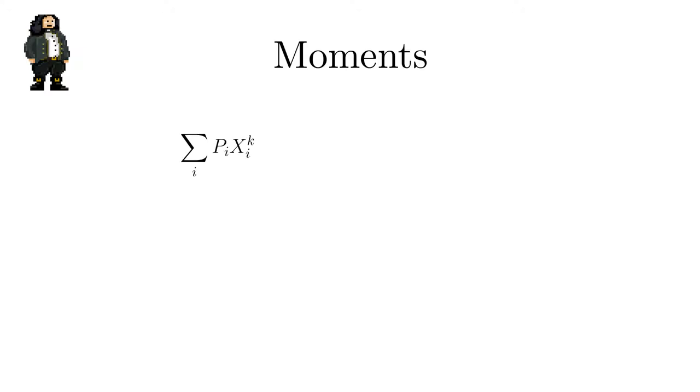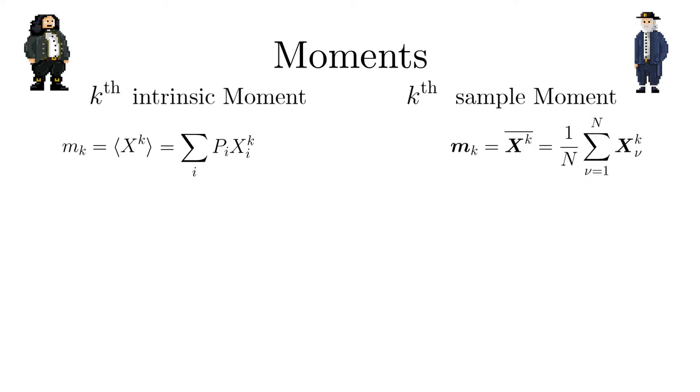The weighted average of the kth power of a random variable x where the weights are given by the probabilities is a recurring structure and it is named the kth moment and is denoted by m_k. The kth moment is equivalent to the mean of x to the power k. We can now readily identify the mean as the first moment but what is the zeroth moment?